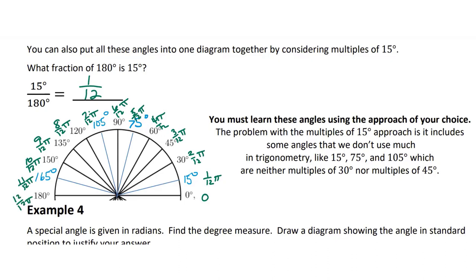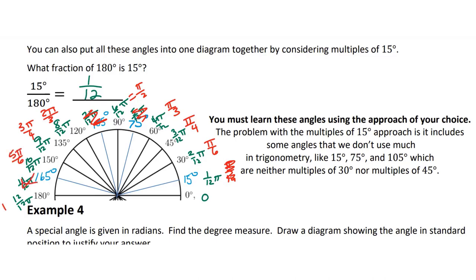So to label all the special angles, they are going to be π/12, π/6, π/4, π/3, skip 5/12, π/2, skip 7/12, 2π/3, 3π/4, 5π/6, skip 11/12, and then π.